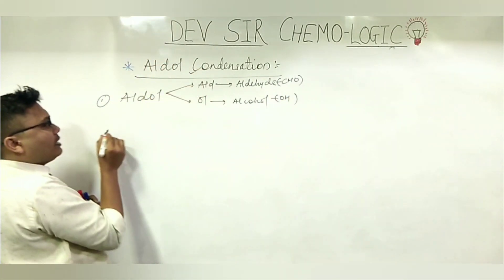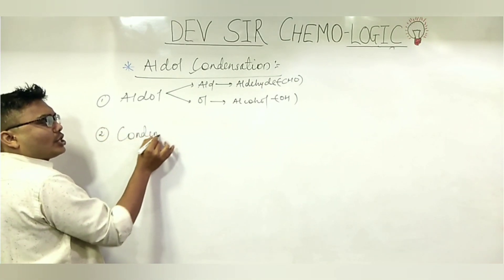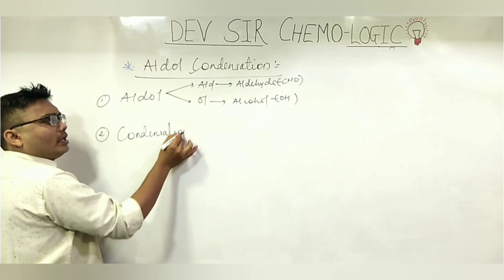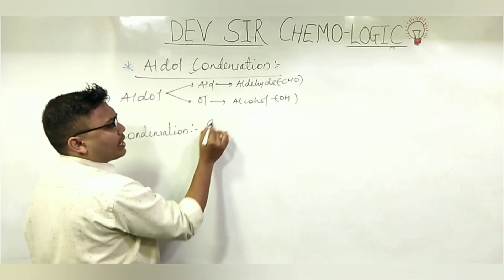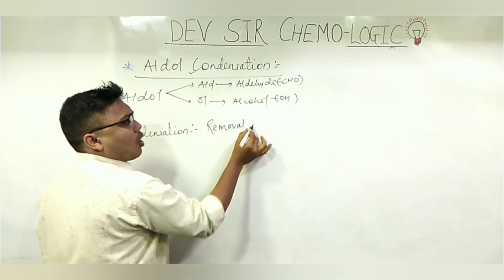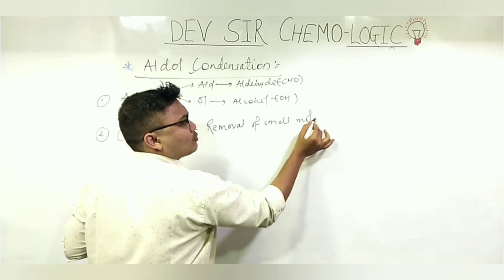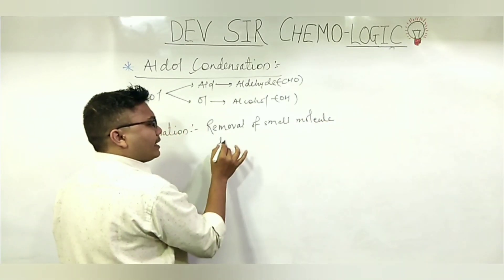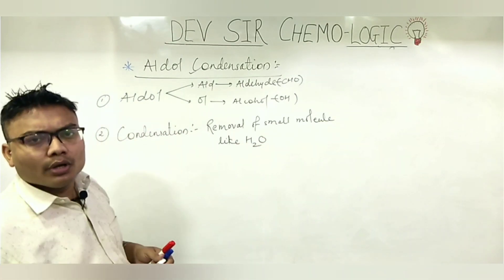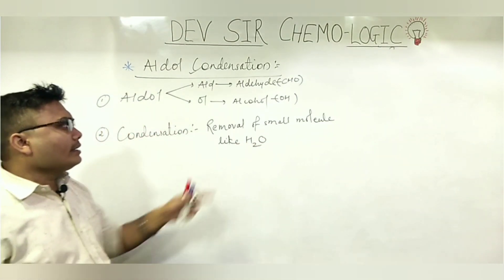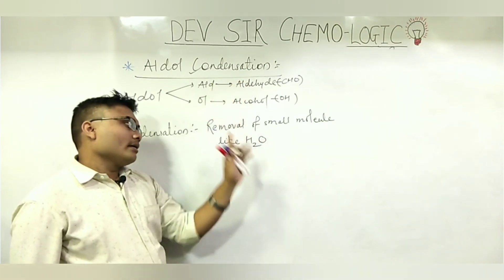Second word is condensation. What is condensation? In organic chemistry, condensation means removal of a small molecule — like water, N₂, H₂, methanol, ammonia, and so on. H₂O. Clear?